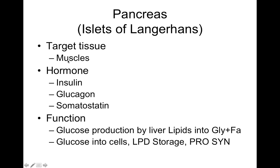The pancreas targets many different tissues, but mainly muscle. Its hormones are insulin, glucagon, and somatostatin. Glucose produced by the liver converts lipids into glycogen and fatty acids. Insulin allows glucose into the cells and stores lipids, and promotes protein synthesis.